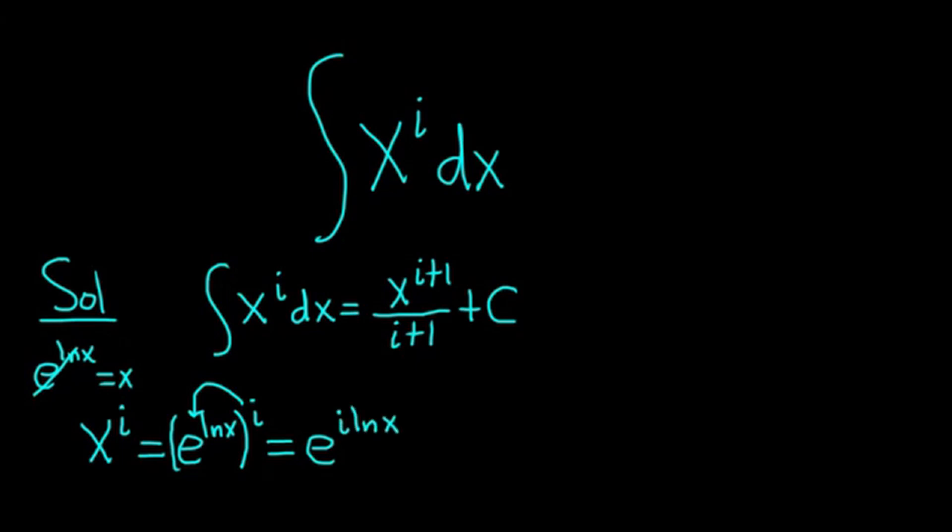Now we can use Euler's formula. Euler's formula is super famous, and it says if you take e to the i theta, that's equal to cosine theta plus i sine theta. This is equal to cosine ln x plus i sine ln x.